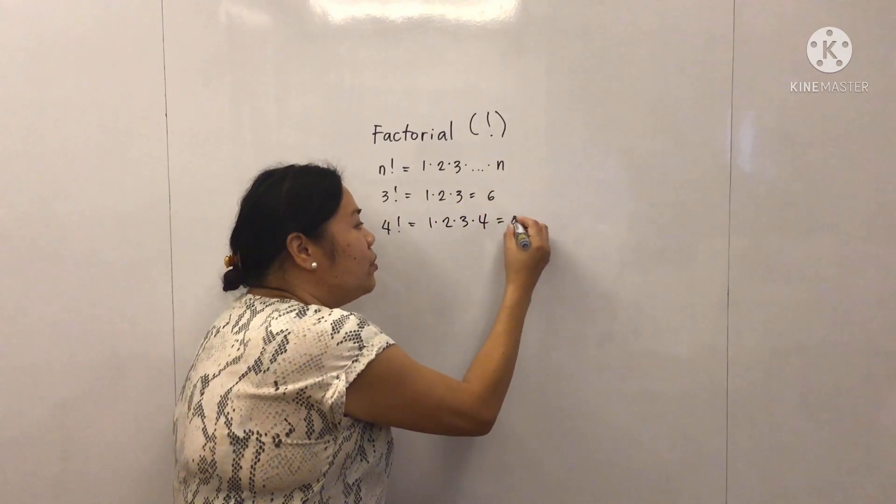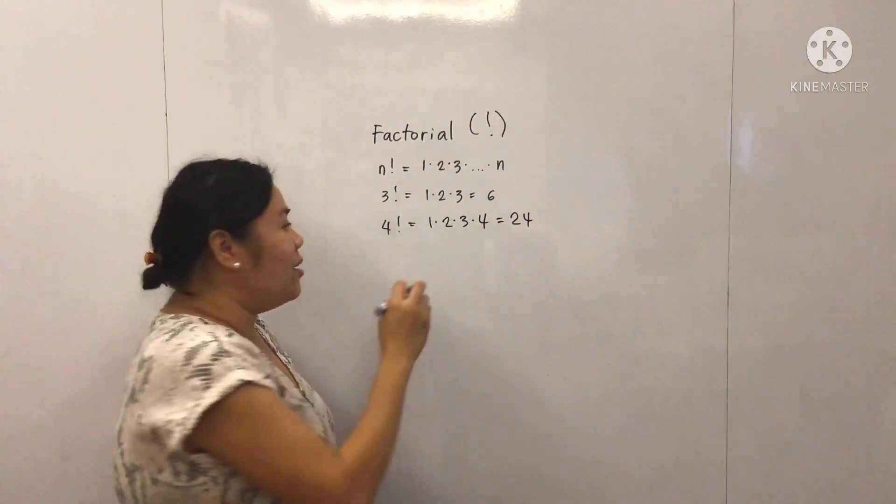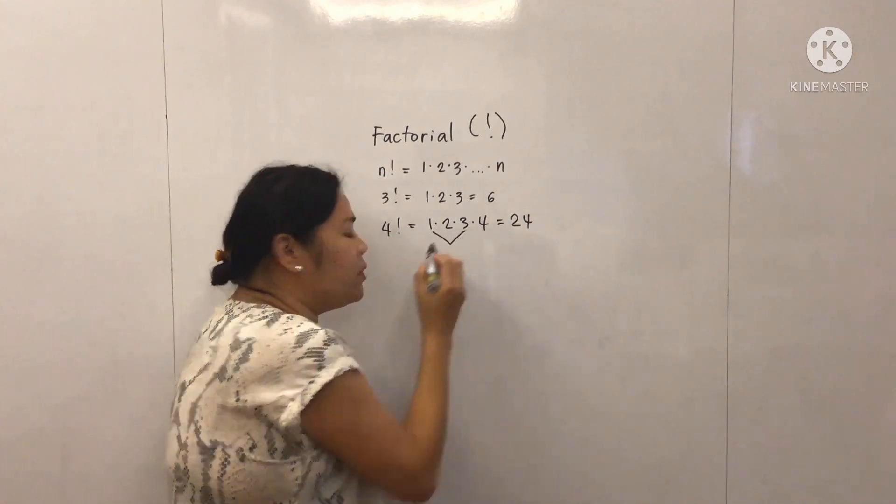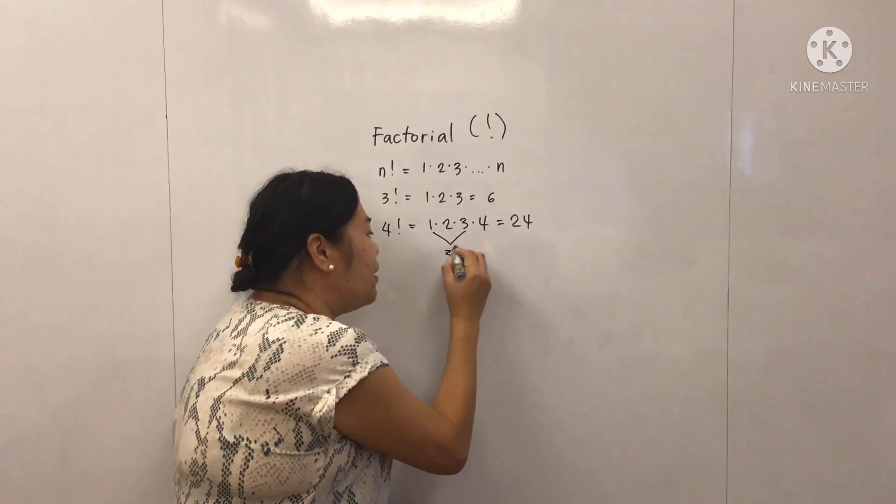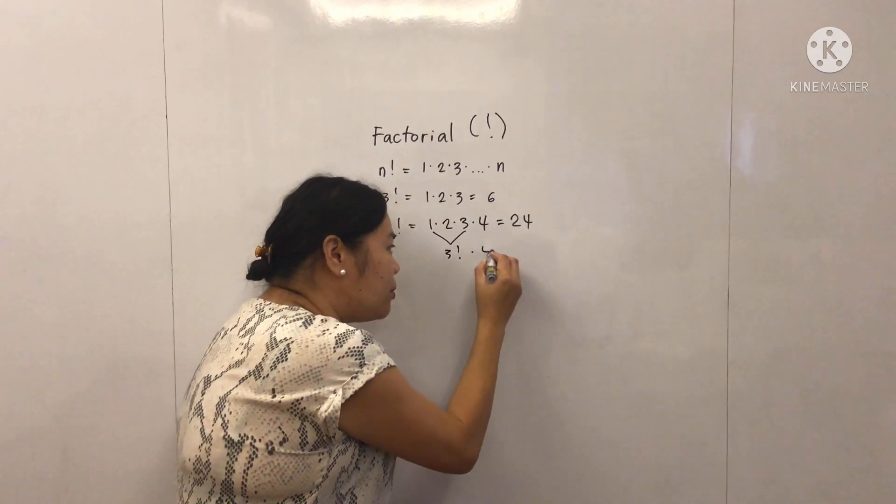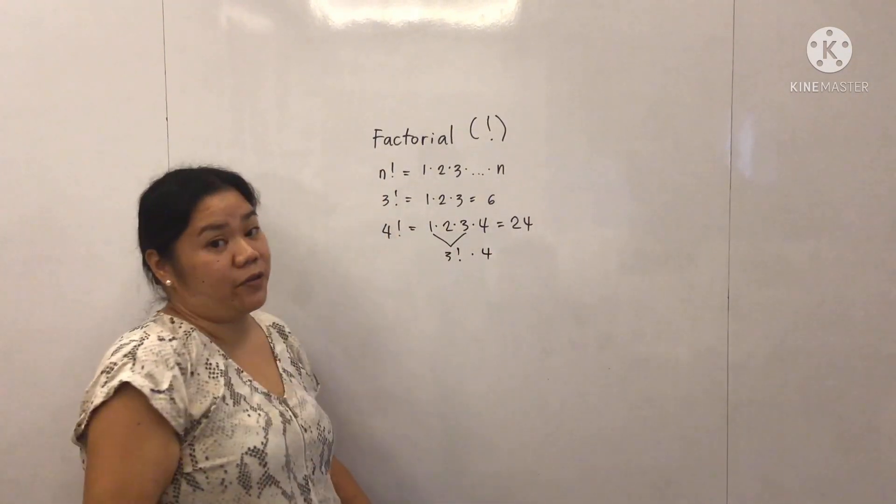And this equals 24. But, you see, have you noticed that 1 times 2 times 3 is 3 factorial and you just multiply it by 4 and you get 4 factorial.